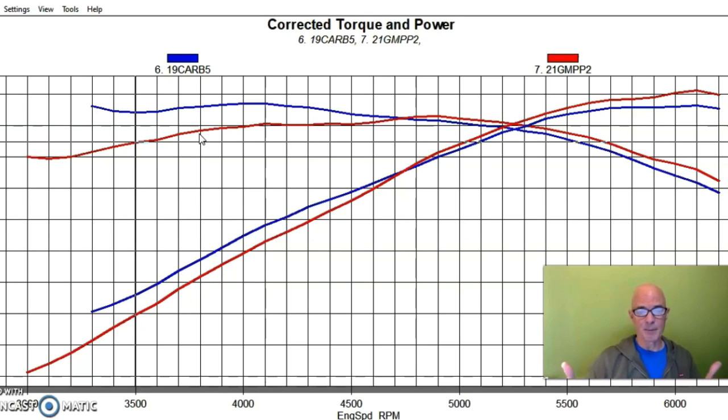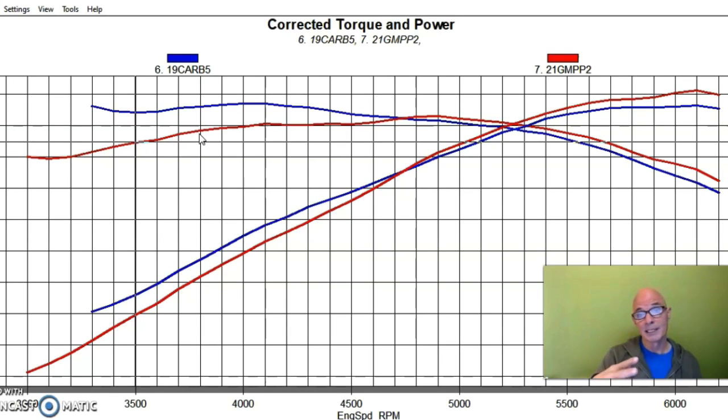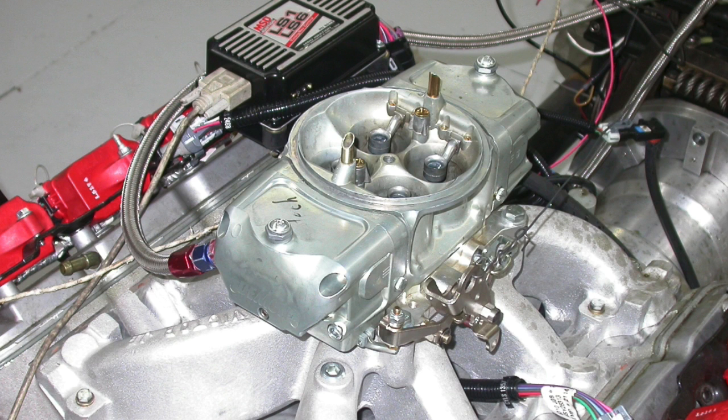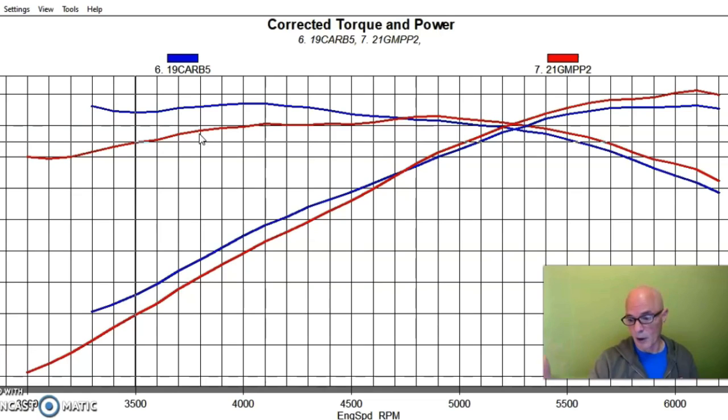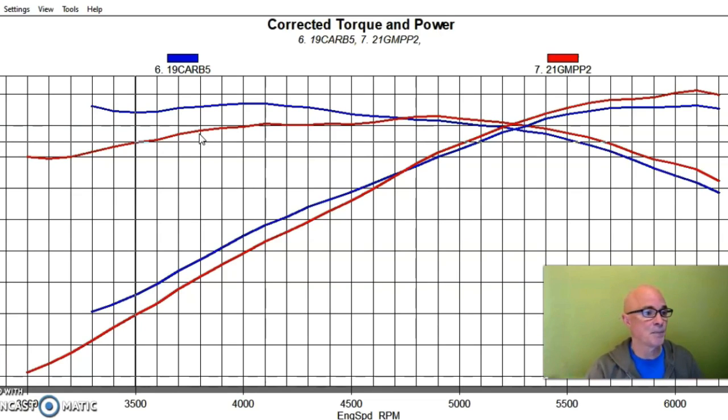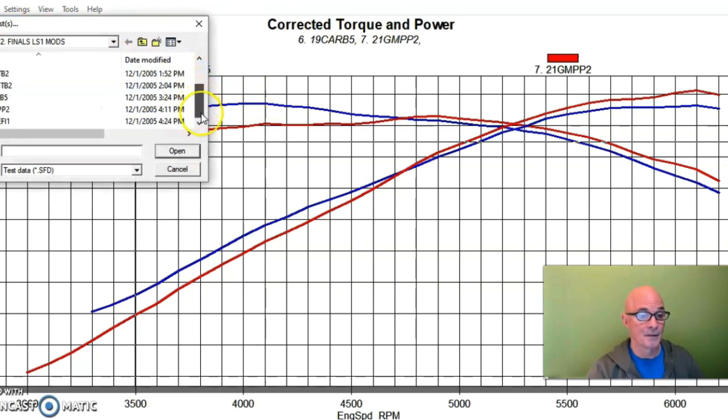But there's an interesting thing we ran. This particular intake manifold that we ran was from GM Performance and it had provisions for injectors. In fact we had to plug those while we were running the carburetor version. What we did was we could easily switch over - take the carburetor off, put a four-hole throttle body on it, and then run it fuel injected with our XFI management system. We did exactly that - we put an elbow on it and a big 102 millimeter throttle body because that's what size the elbow was set for.